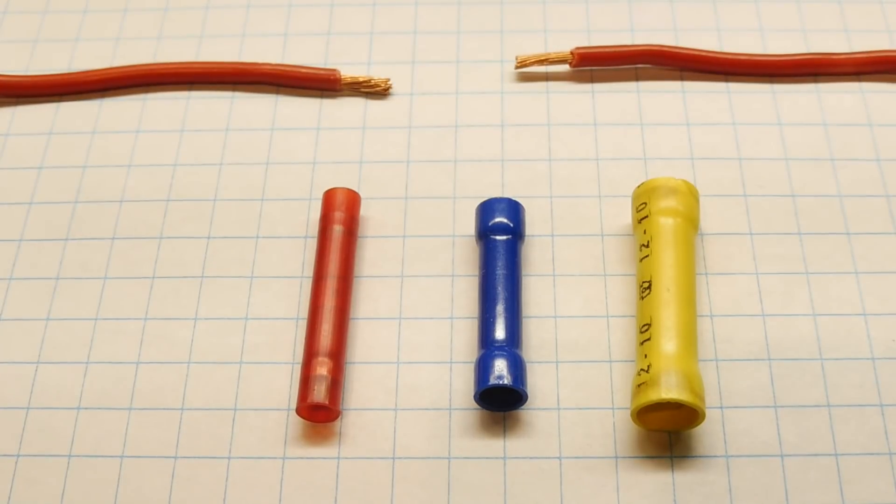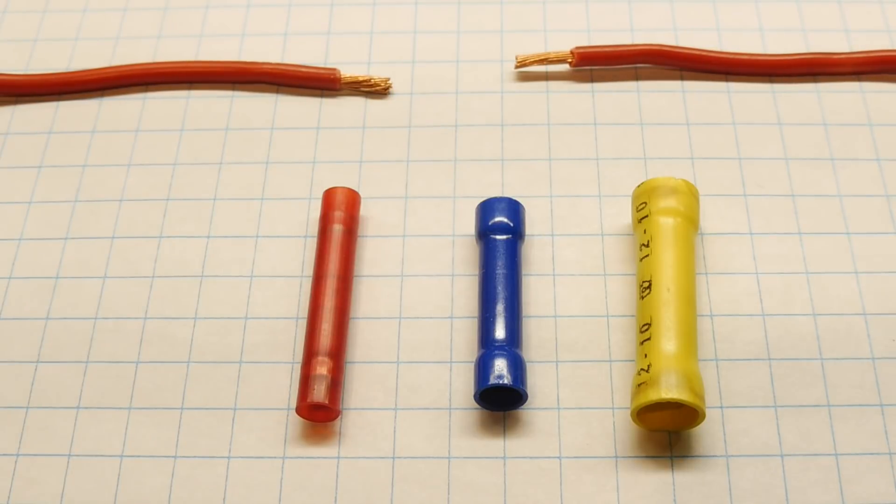The first splice that we're going to look at is a common butt splice and you can see I have three butt connectors: red, blue, and yellow, that's small, medium, and large gauge wire. The red is for 18 to 22 gauge wire, the blue is for 14 to 16 gauge wire, and the yellow is for 10 to 12 gauge wire.